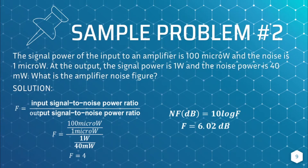Sample problem 2: The signal power at the input of an amplifier is 100 microwatts and the noise is 1 microwatt. At the output, the signal power is 1 watt and the noise power is 40 milliwatts. Find the amplifier noise figure. Since the individual signal and noise powers are given for both input and output, we need to first solve for the SNR at each end.